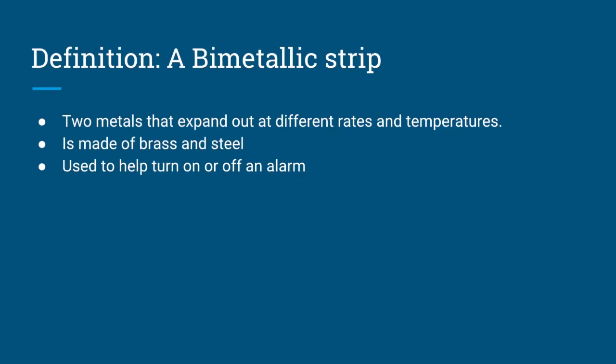Definition: A bimetallic strip - two metals that expand at different rates and temperatures. It is made of brass and steel, used to help turn on or off an alarm.